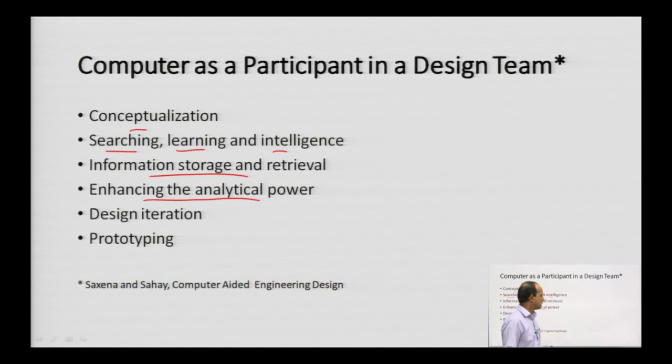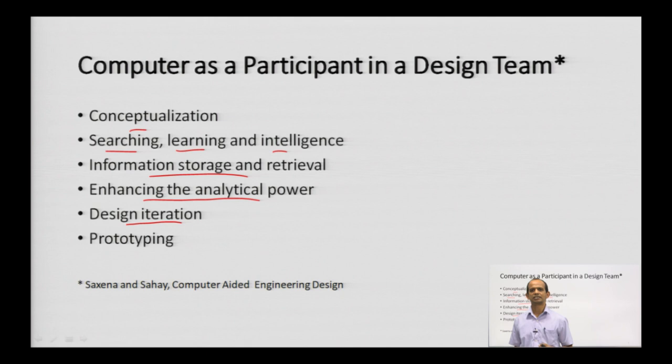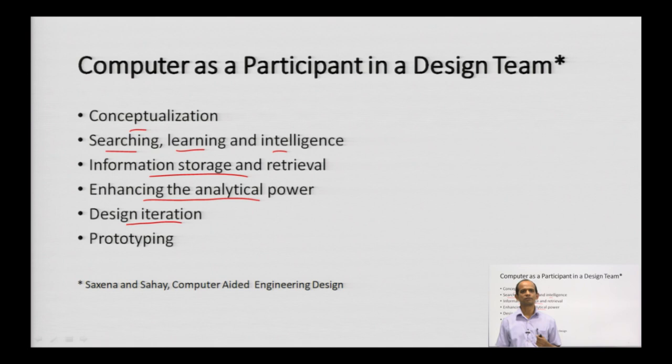Design is an iterative process — no design is the final design. At every stage there is the possibility to go back and improve. The shapes, sizes, and features of products change day by day depending on customer needs and problems users face. Design iteration is done easily with the aid of computers; doing the same kind of iteration manually would be a difficult task.